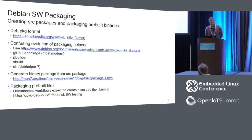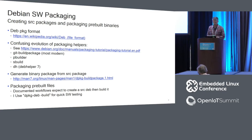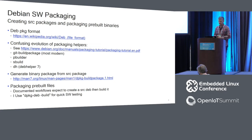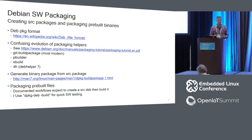The .deb package format has control files, package dependency descriptions, and lots of tools for querying and installing. It's supported by Yocto and by Debian derivatives like Ubuntu. There's a confusing evolution of packaging helpers: git-buildpackage for git repositories, pbuilder, sbuild, and dh (debhelper 7). You'll see references to all of these in Debian documentation, and it's a big learning curve.